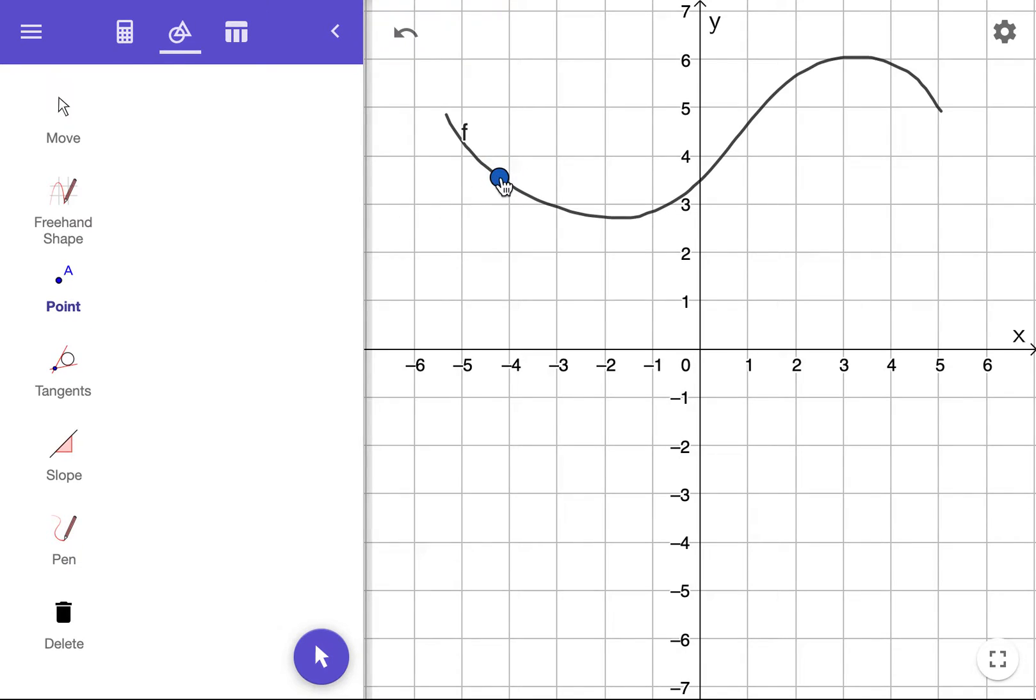So we'll use the point tool to plot a point here. We'll use the tangents tool to plot a tangent there. Just select the tool, touch the curve, then touch the point, turn the tool off by selecting the move arrow, and you can see we can move this around. Again, GeoGebra treats that hand sketch just like a function.